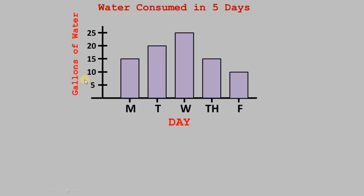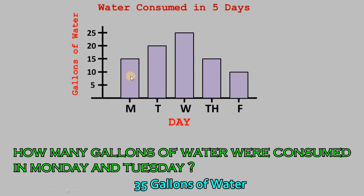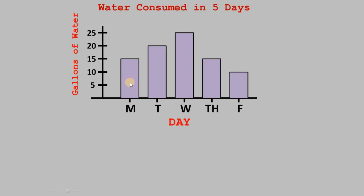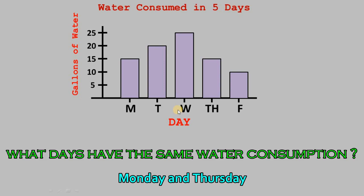For our next question: how many gallons of water were consumed on Monday and Tuesday? Monday had 15 gallons of water and Tuesday had 20 gallons of water, for a total of 35 gallons. Next: what days had the same water consumption? Based on the graph, Monday has 15 gallons and Thursday also has 15 gallons. Therefore, Monday and Thursday have the same consumption of water.